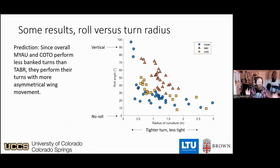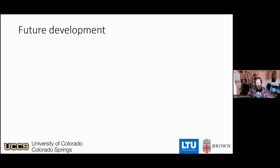Just one last look at this turning graph to remind us of my erroneous prediction about what we would see when we looked at the movements of the individual wings. That concludes my brand new data, and there's more in the pipeline. We're going to do this for more species and also more flight events for the current species.